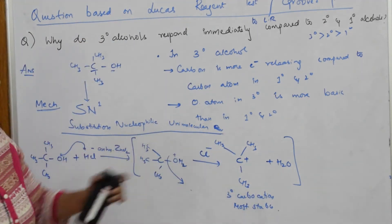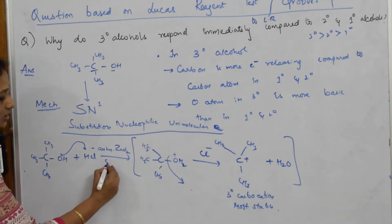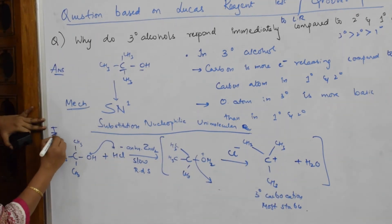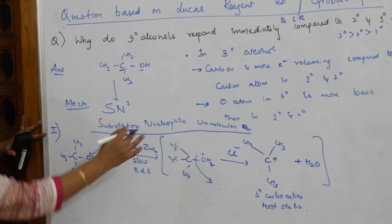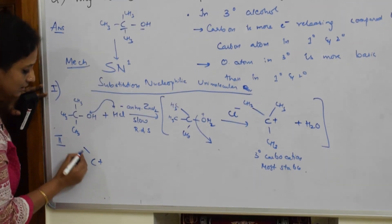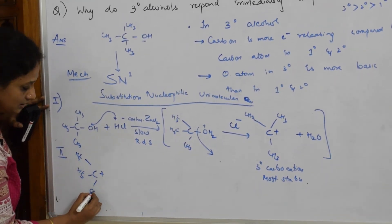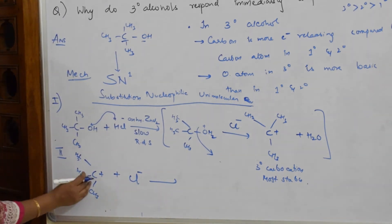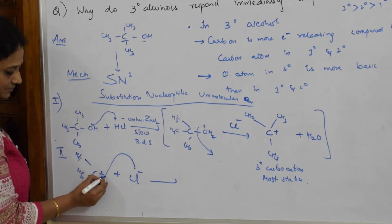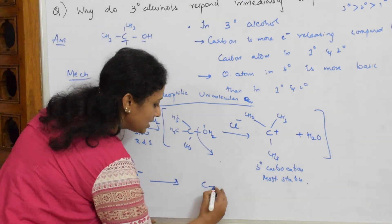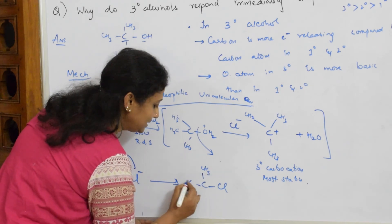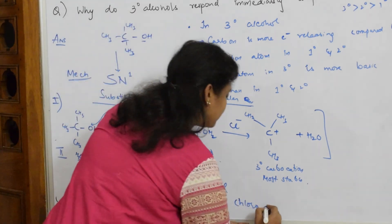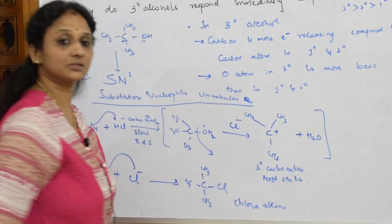This tertiary carbocation formation is the slowest step — the rate-determining step. Now in the second step, Cl- comes in and attacks this tertiary carbocation. What do I get? C(CH3)3Cl — the tertiary chloroalkane is formed. The chloroalkane is prepared.